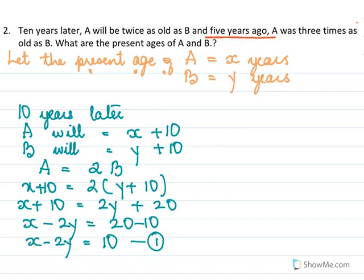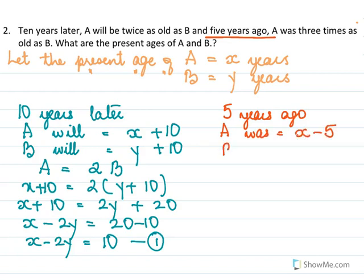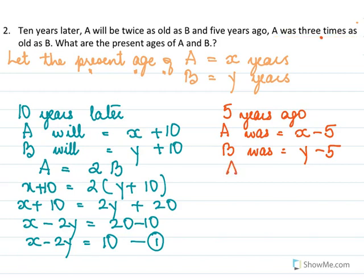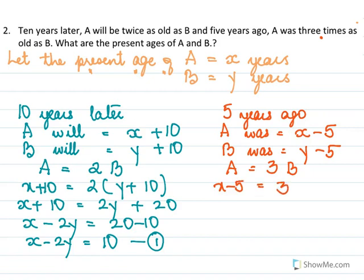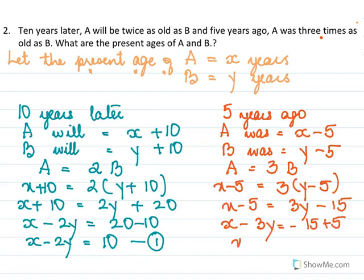The next part is 5 years ago, which is in the past. So A was x minus 5 and B was y minus 5. The condition given is 5 years ago A was 3 times as old as B, which means x minus 5 equals 3 times y minus 5. Opening the bracket: x minus 5 equals 3y minus 15, so x minus 3y equals minus 10. This is equation two.